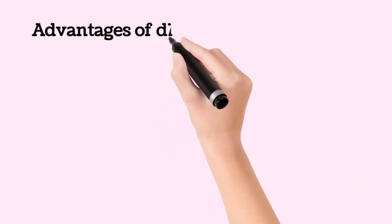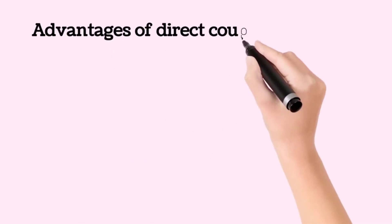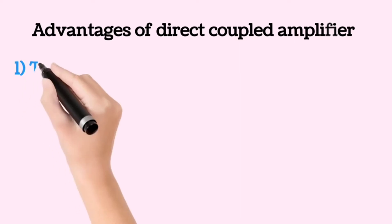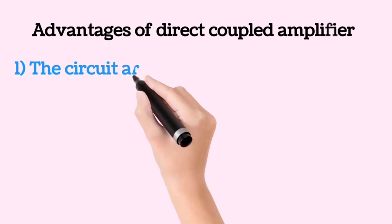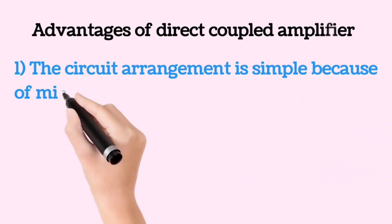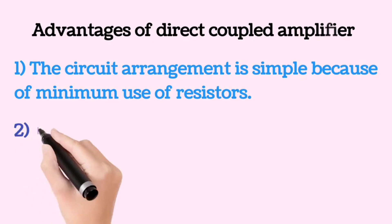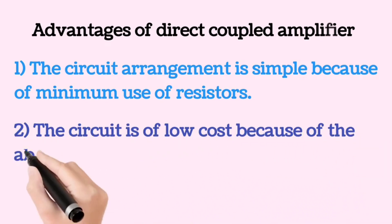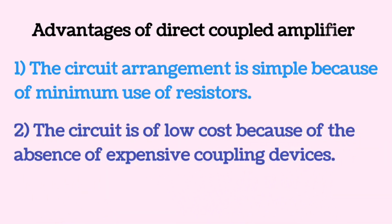First of all we will discuss about the various advantages of using the direct coupled amplifier circuit. The first advantage is that the circuit arrangement of the direct coupled amplifier is very simple because of the minimum use of resistors and the absence of expensive coupling devices like inductors.